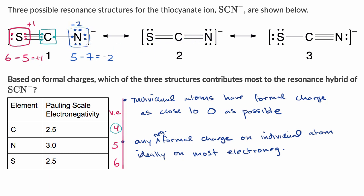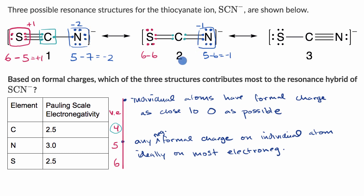In the second resonance structure, sulfur has six outer electrons hanging out — the same as a neutral sulfur's valence electrons — so no formal charge there, six minus six equals zero. Carbon again has four outer electrons, same as neutral carbon's valence electrons, so no formal charge. Nitrogen has six outer electrons hanging out; neutral nitrogen would have five, so five minus six gives a negative one formal charge on nitrogen in this second resonance structure.